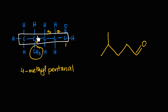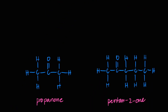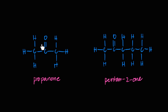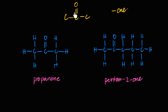Now for ketones. A ketone has a C=O group somewhere in the middle of the chain — not at the end, because that would make it an aldehyde. The C=O must have carbons on both sides. The smallest possible ketone is three carbons. Ketone names end in '-one,' and the position of the ketone group matters. For propan-2-one, with three carbons, the ketone is always on carbon two — so we don't write the '2' since it's the only possibility.